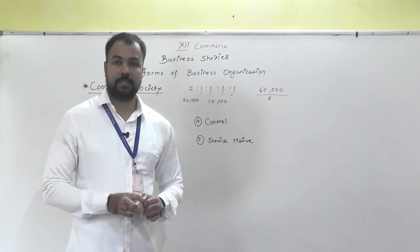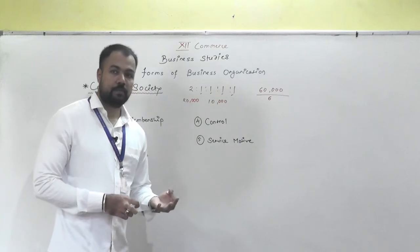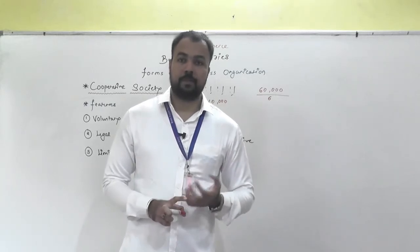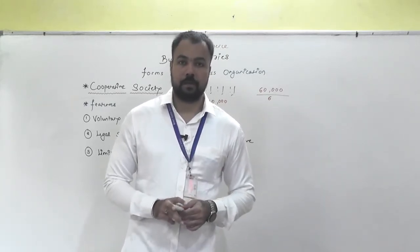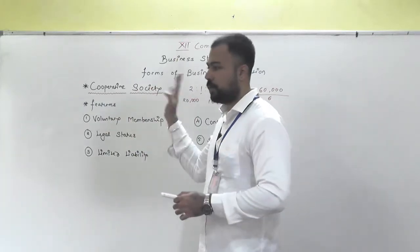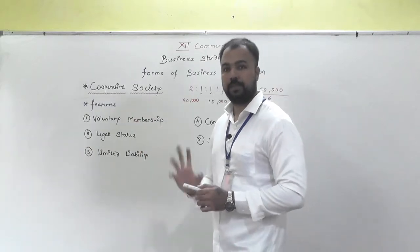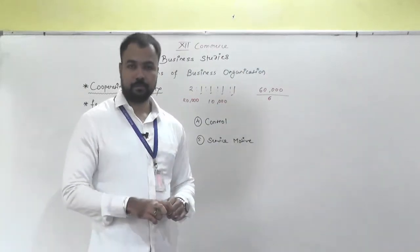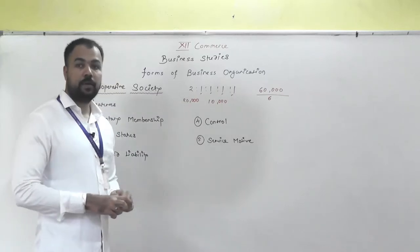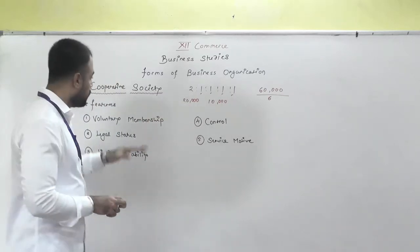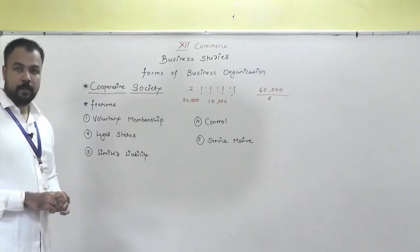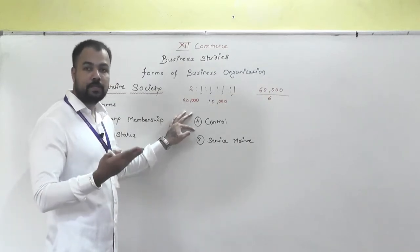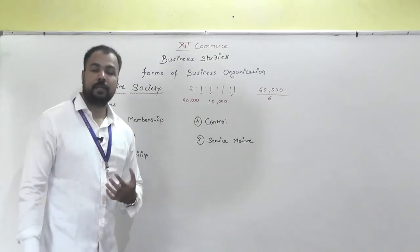In a cooperative society, there are posts like director, chairman, and secretary in the management committee. For example, XYZ is the director of this cooperative society, ABC is the chairman of this society, and PQR is the secretary of this society. The director and chairman are top-level managers who manage the society. The members of the society elect the management committee.